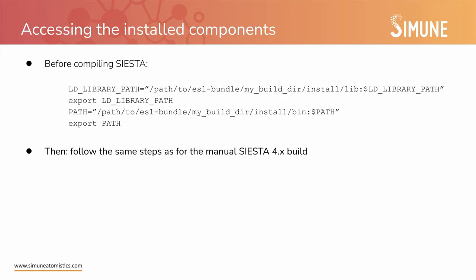The ESL bundle will produce a series of libraries and executables and to access them, you will need to add some variables to your environment. These are mainly LD_LIBRARY_PATH for the libraries and updating the PATH for the executables. After you compile Siesta, you will also have to add these lines to your siestavars.sh file. Then to compile Siesta is the same as what we explained for Siesta 4: you create an arch.make, you finish the configuration, and then you make the executable and copy it to the directory of your choice.